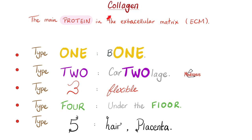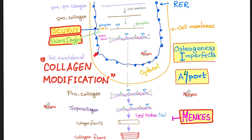Type 1 collagen is in bone, but type 2 is in cartilage. You need vitamin C for hydroxylation during post-translational modification of collagen. If you lack vitamin C, you can develop scurvy. In scurvy, your collagen is so weak that your blood vessels are weak, your hair gets curly, and you start bleeding from your gums. Histologically, your bone has the Haversian system.